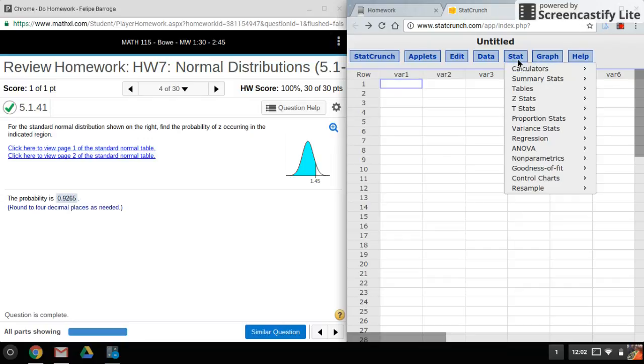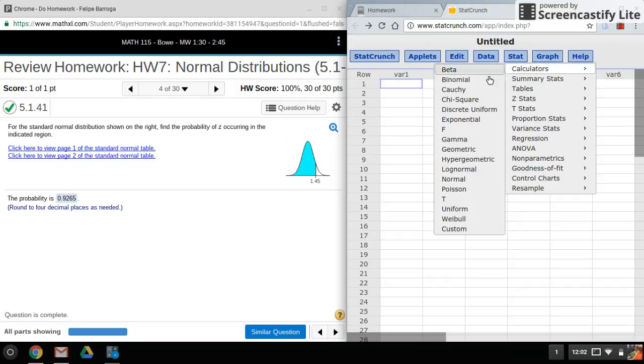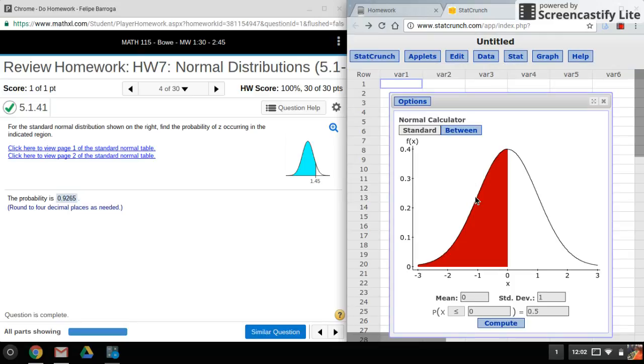If we're using z-scores, you want to leave the mean at zero and the standard deviation at one. Here we're given a z-score, so I'll enter that here.